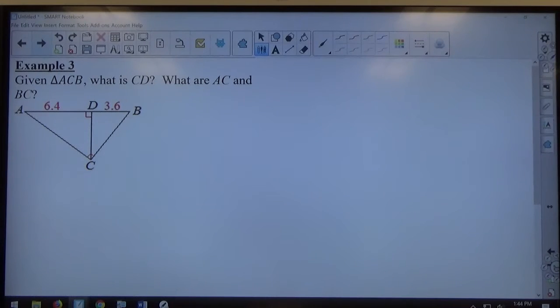Example 3, it says, given triangle ABC, notice ABC is marked with the right angle C. What is CD? What are AC and BC?